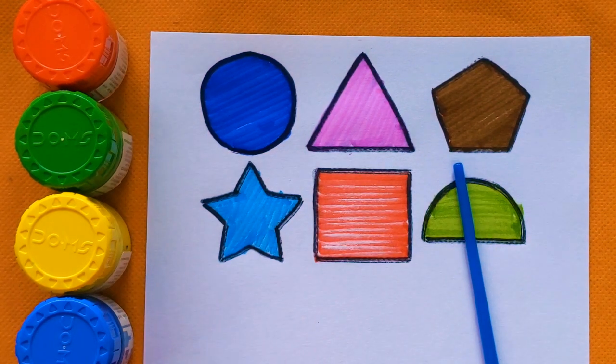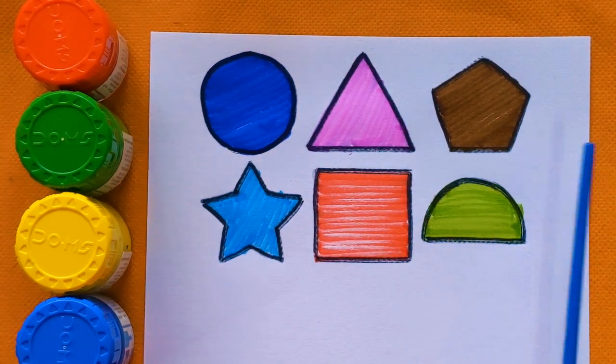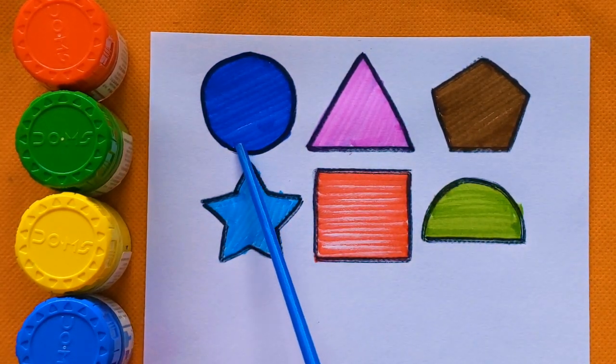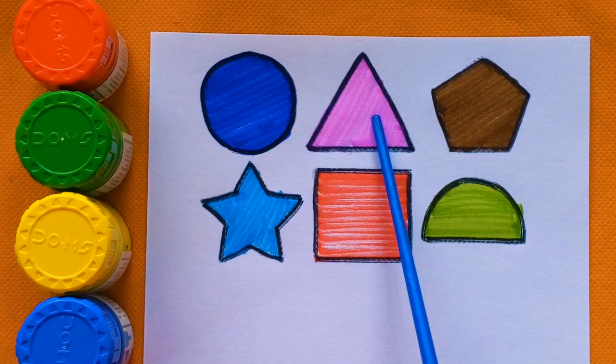Now we will revise shapes name with their colors. Circle shape blue color, triangle shape purple color, pentagon brown color, star shape sky blue color, square red color, and semi-circle light green color.